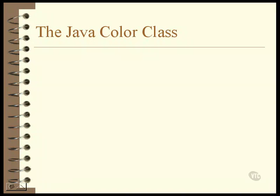This lesson is an introduction to colors. Colors in Java are set by creating a color object and then storing the object in the graphics object. Once this is done, everything painted to the window using the graphics object is in the specified color.